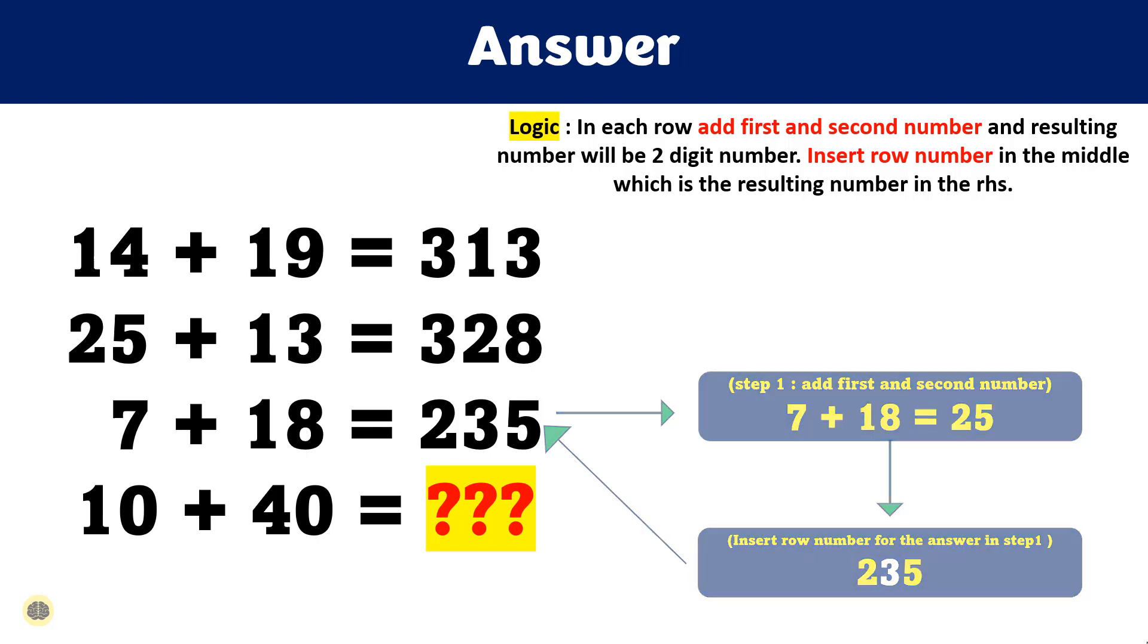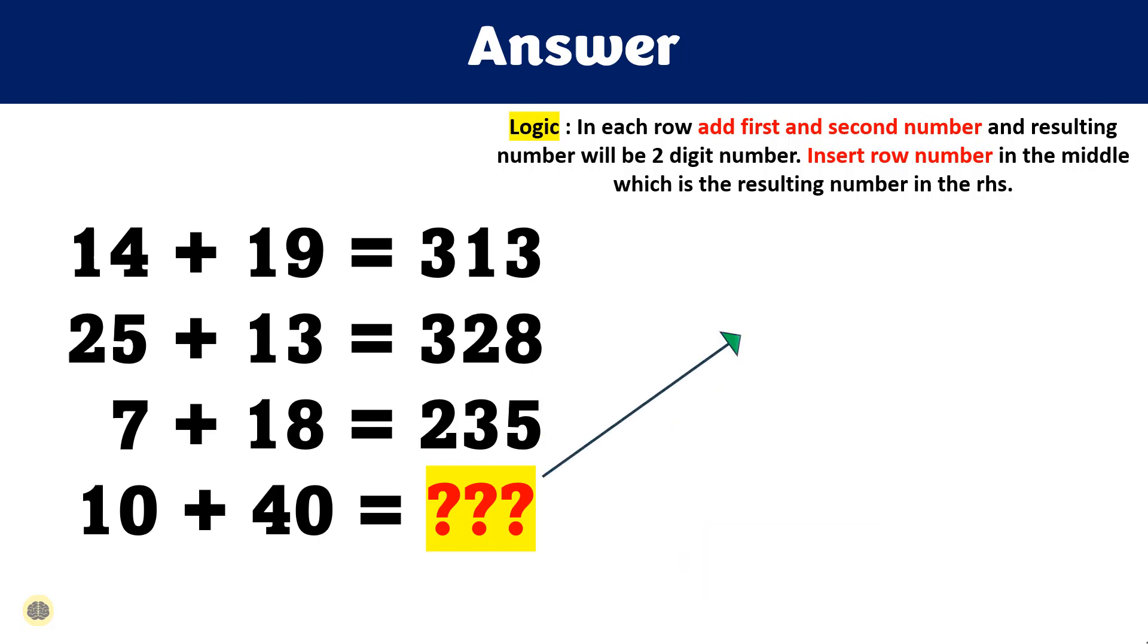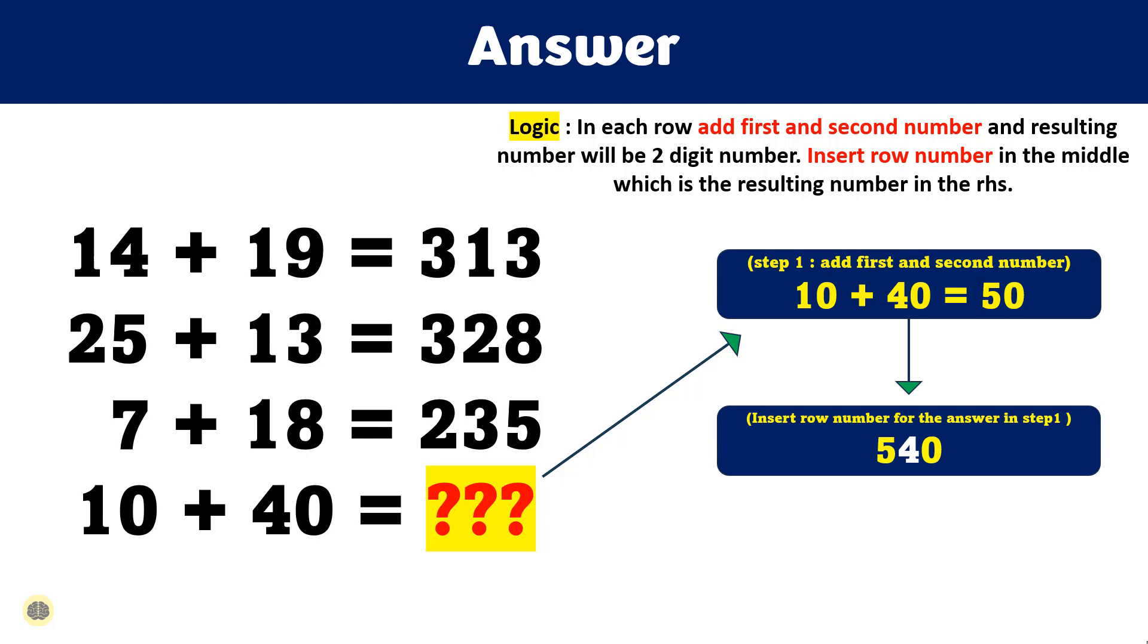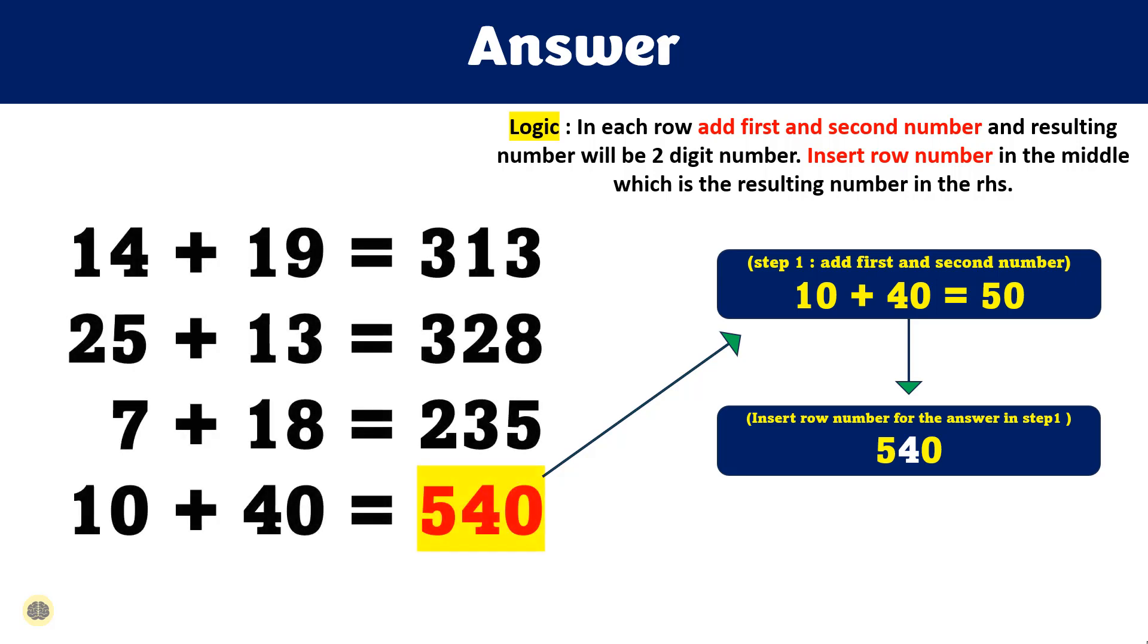Follow the same logic to find the answer in the final row. If you look at the fourth equation, addition of two numbers 10 and 40 will result in 50 and 4 will be inserted in middle. Since this is fourth row, 4 will be inserted between numbers and this will result in 540. Hence the answer is 540.